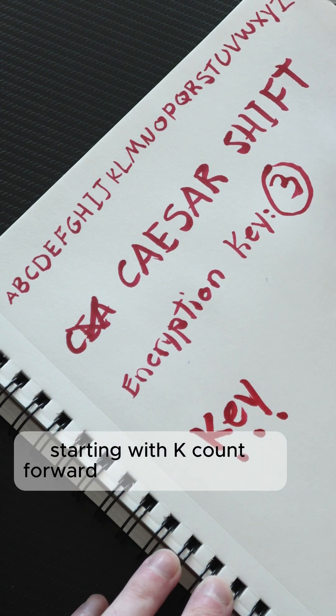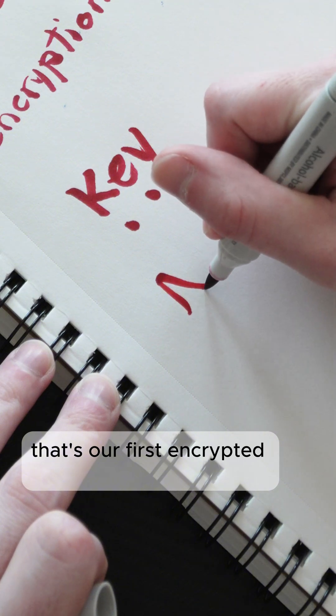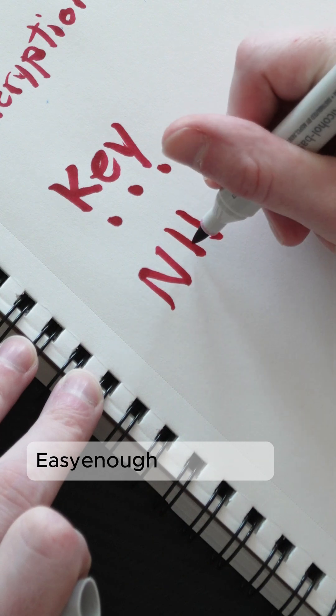Starting with K, count forward three letters. L, M, N. That's our first encrypted letter. Next, E, we count F, G, and H. Easy enough.